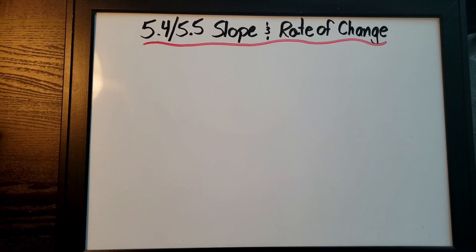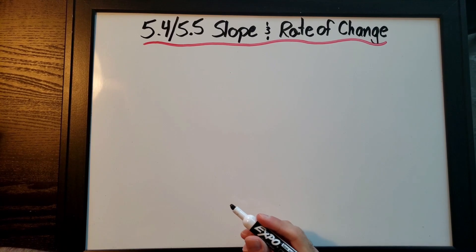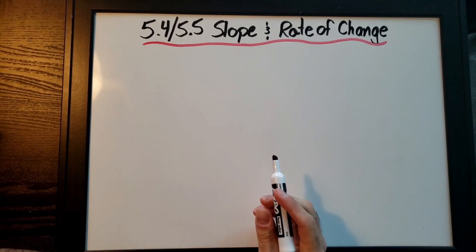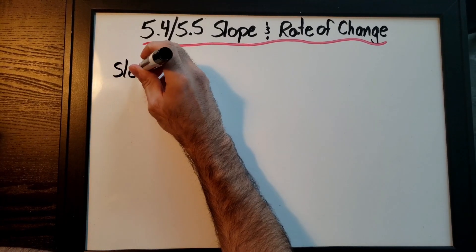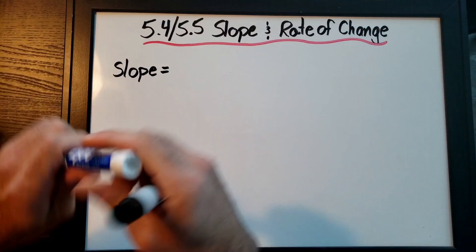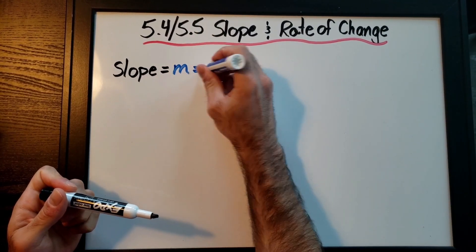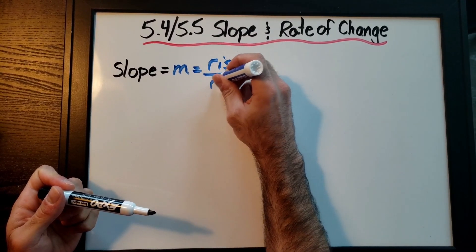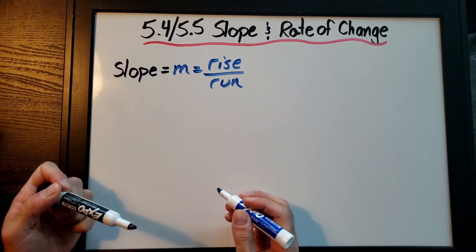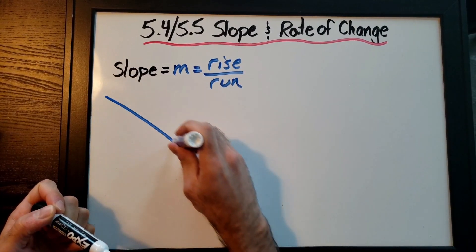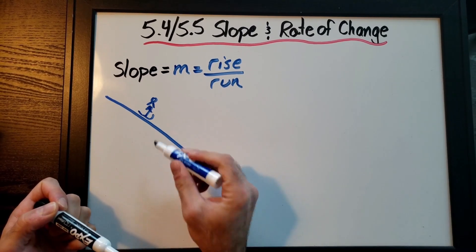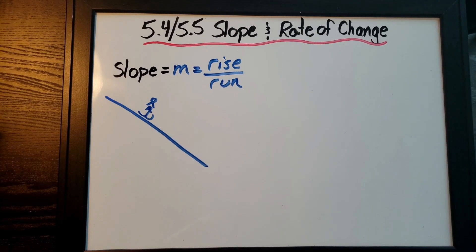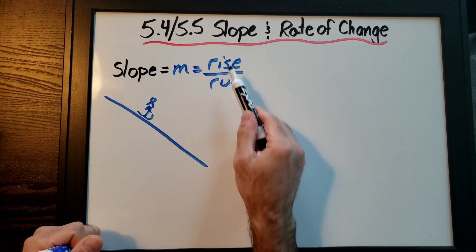Sections 5.4 and 5.5 are about slope and rate of change. They're pretty similar — one is quantifiable and one really isn't. Slope is a really important concept for pretty much the rest of high school. We define slope using the letter M. A good way to remember it is to think of a ski slope: the steeper the slope, the faster you ski.